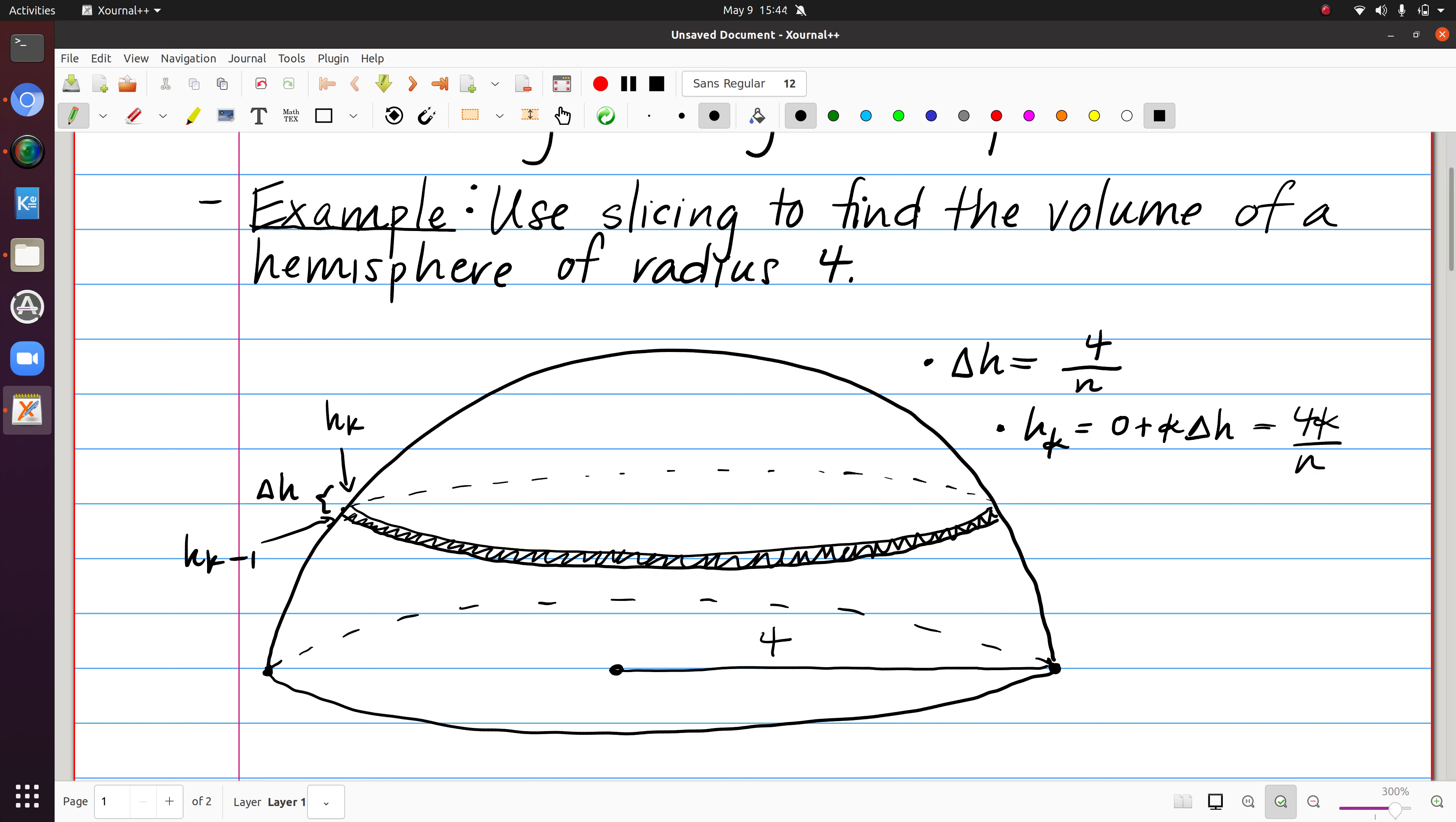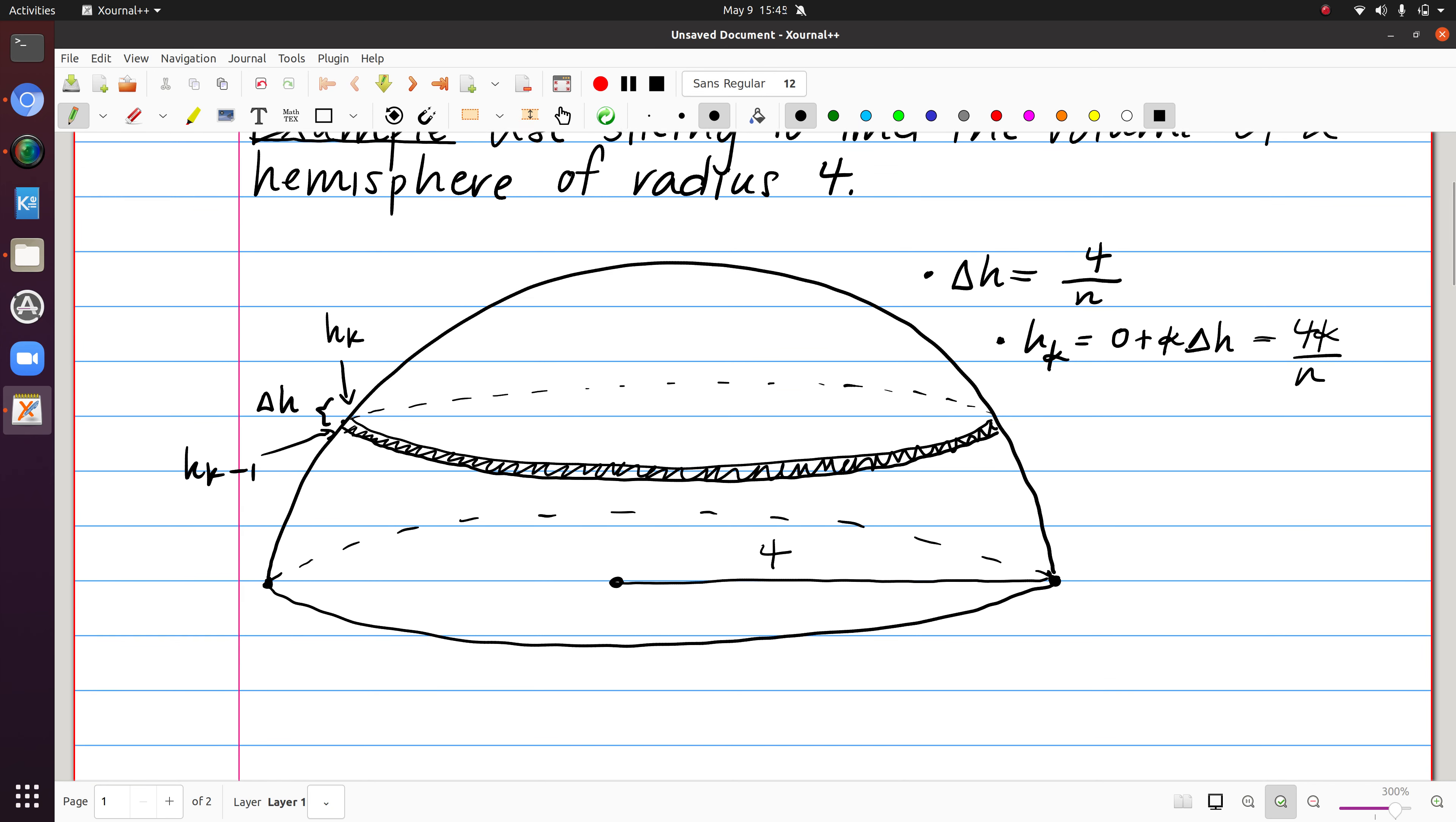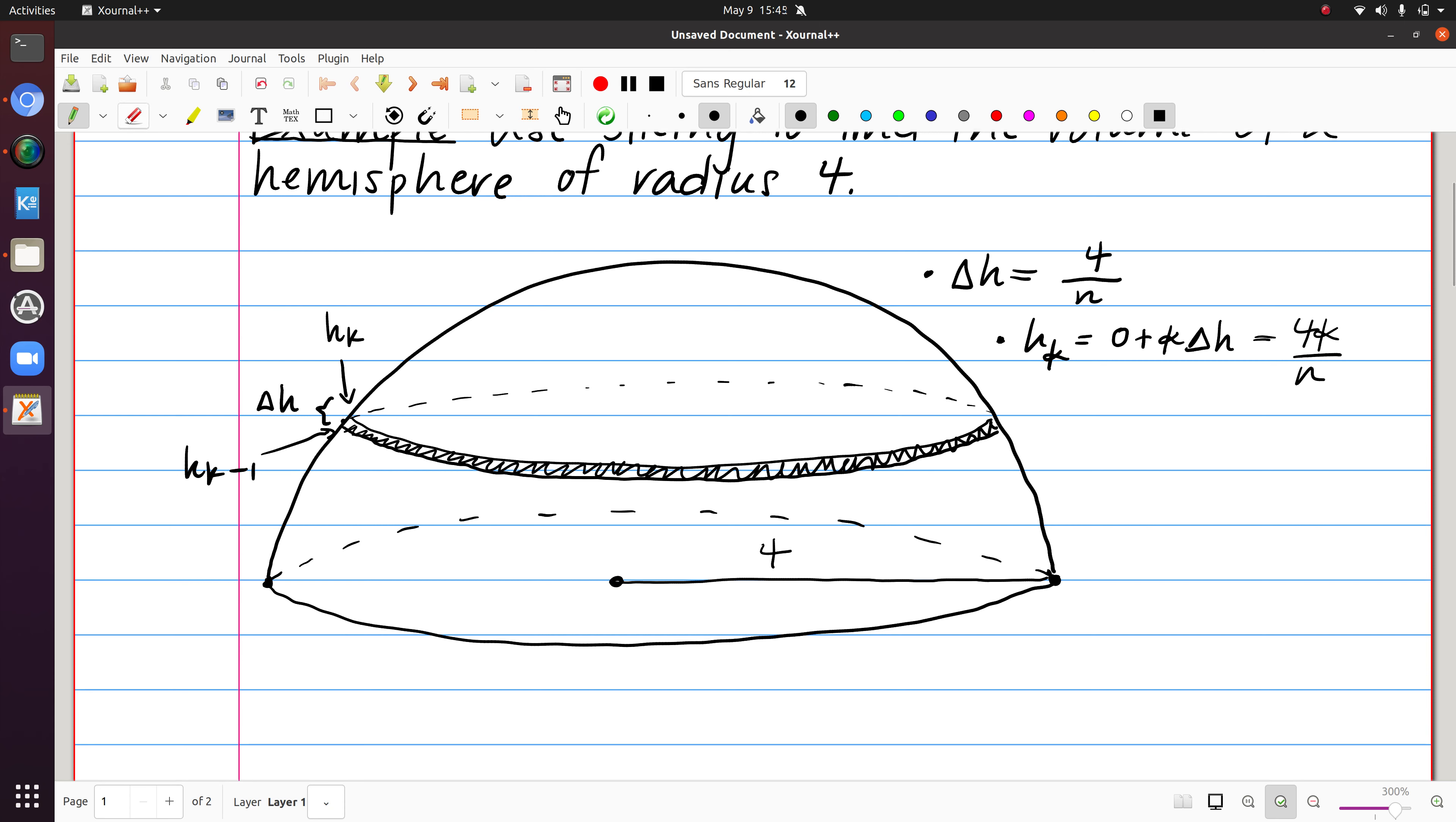And then to think about the volume here, what we can consider is this slice. And again, let me just to further emphasize it, I'll highlight this in. We're looking at the volume, I'll call it again v sub k, of this kth slice. And so I have to pause here and think about how I'm going to approximate that volume.